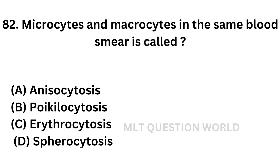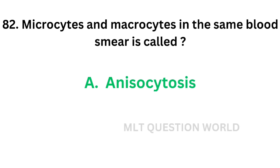Question number 82: Microsites and macrosites in the same blood smear is called. Option A: anisocytosis. Option B: poikilocytosis. Option C: erythrocytosis. Option D: spherocytosis. Anisocytosis is the variation of cell size. Poikilocytosis is the variation of cell shape. Erythrocytosis is increased RBC count. Spherocytosis is the presence of spherocytes in blood. So the correct answer is Option A, anisocytosis — microsites and macrosites in the same blood smear is called anisocytosis.